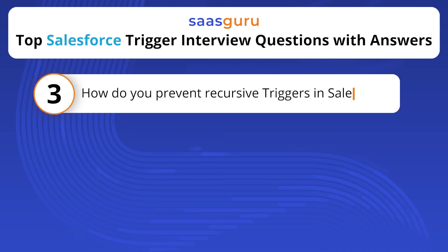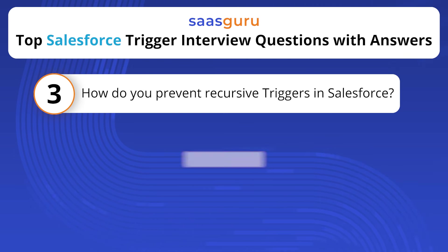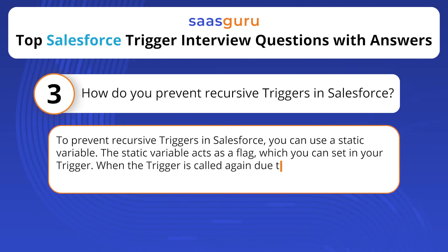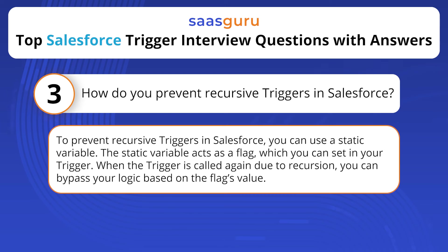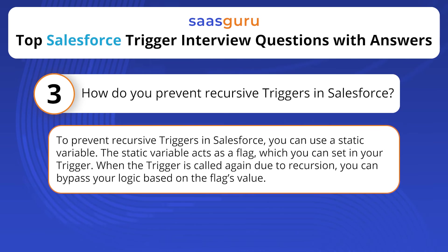How do you prevent recursive triggers in Salesforce? To prevent recursive triggers in Salesforce, you can use a static variable. The static variable acts as a flag, which you can set in your trigger. When the trigger is called again due to recursion, you can bypass your logic based on the flag's value.